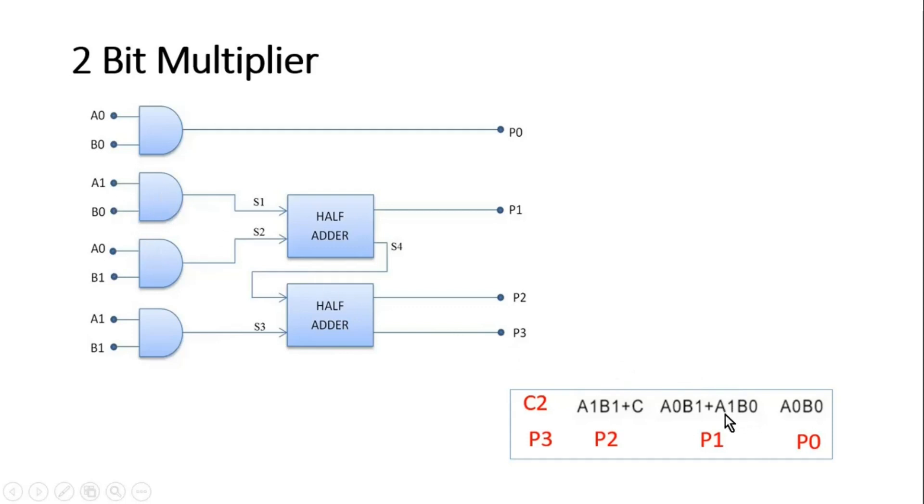Half adder will give me P1 and this carry will be forward to the next position. So what is the next position? Next position is I need to add that carry with A1 B1. So A1 B1, I need to put one AND gate plus with this carry.